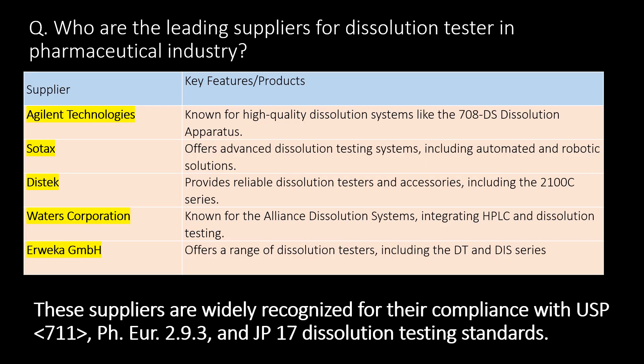Who are the leading suppliers for dissolution testers in the pharmaceutical industry? Agilent Technologies, Sotex, Bistec Waters Corporation, and Herbeca GmbH are leading suppliers for dissolution testers. These suppliers are widely recognized for their compliance with USP chapter number 711, European Pharmacopoeia 2.9.3, and Japanese Pharmacopoeia dissolution testing standards.